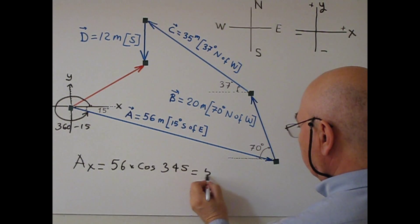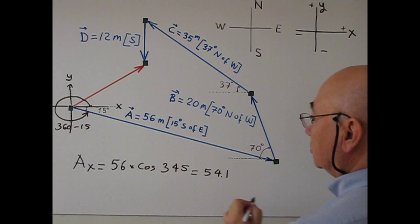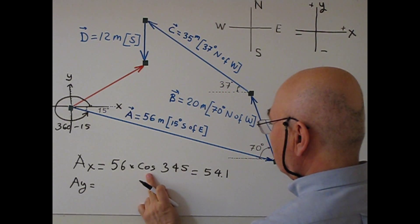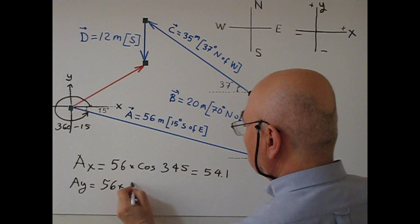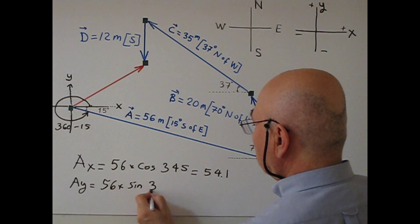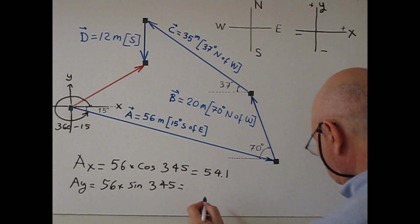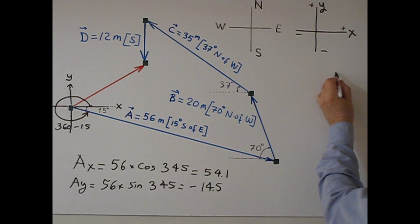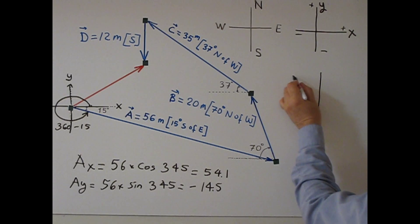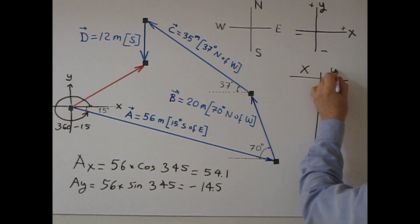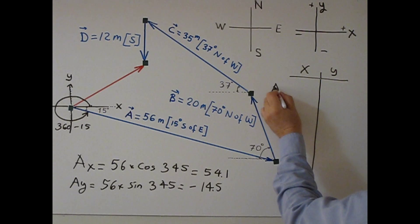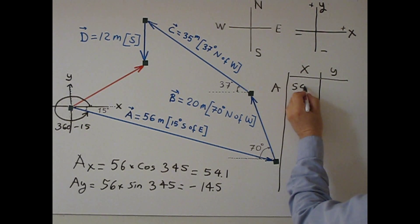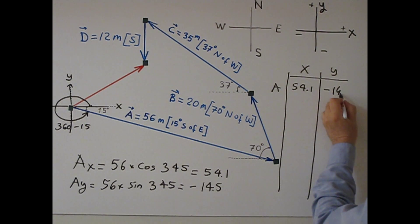Now for the y-component, everything is the same except this becomes sine. So 56 times sine of 345 equals negative 14.5. If I put this in a table with x-component and y-component, A has Ax equal to 54.1 and Ay equal to negative 14.5.